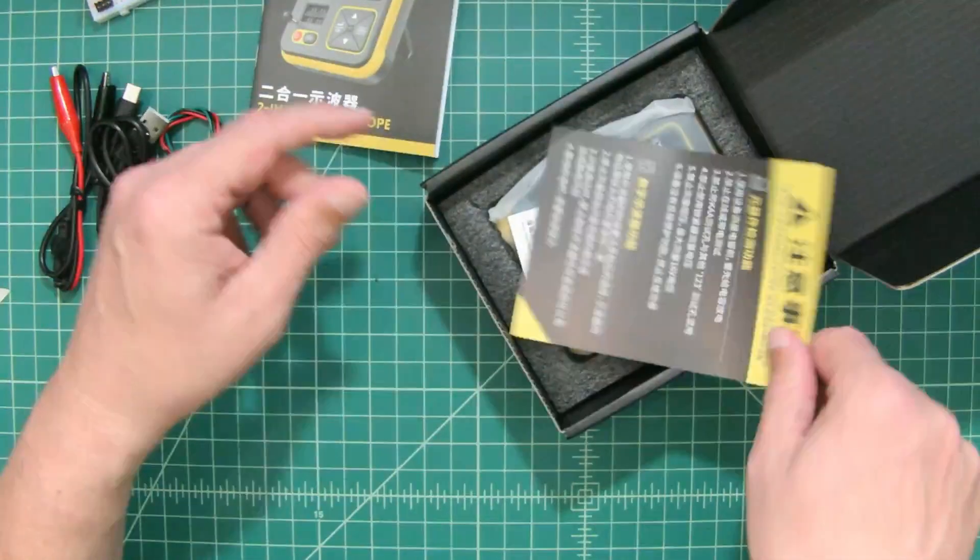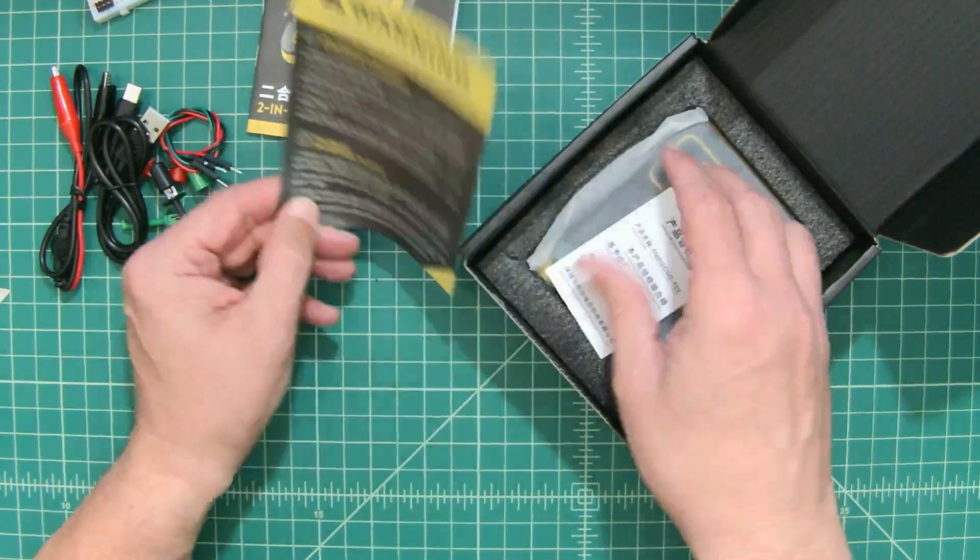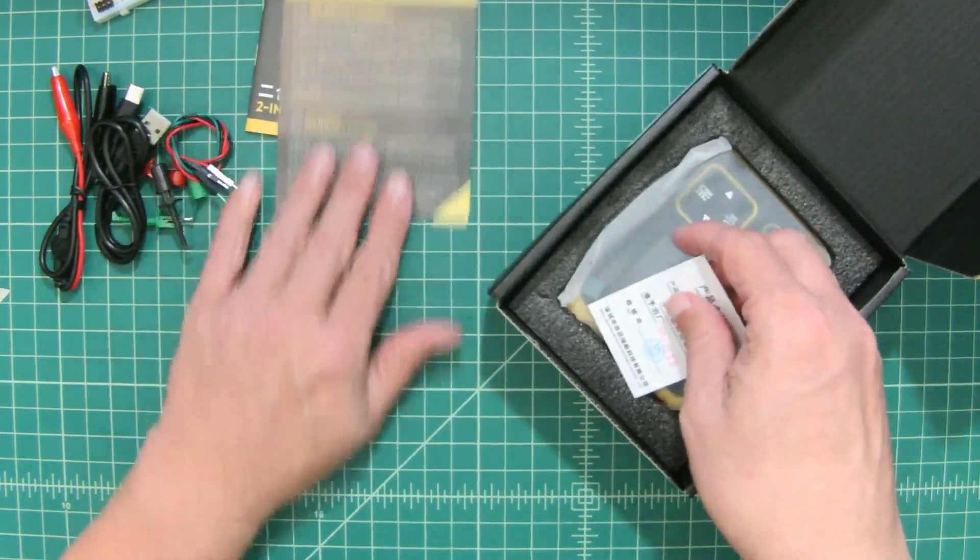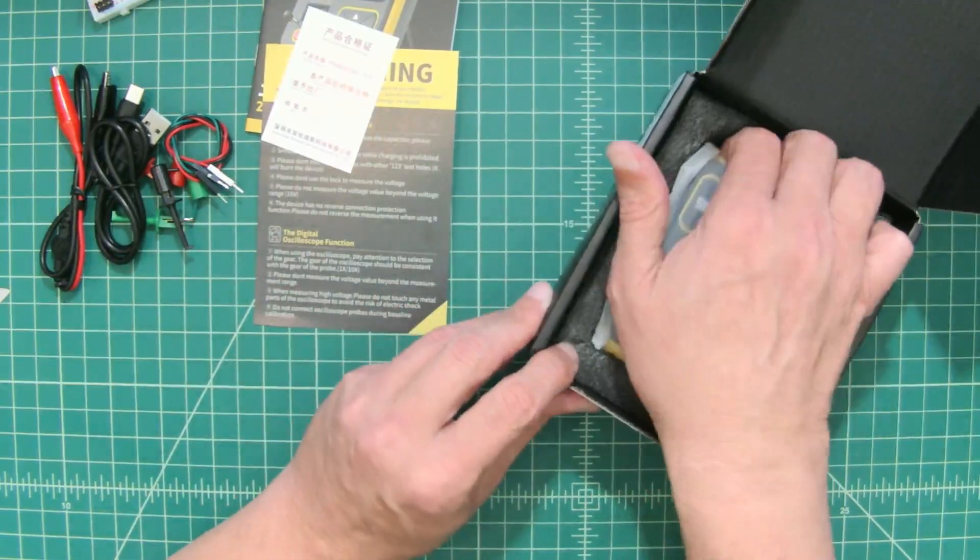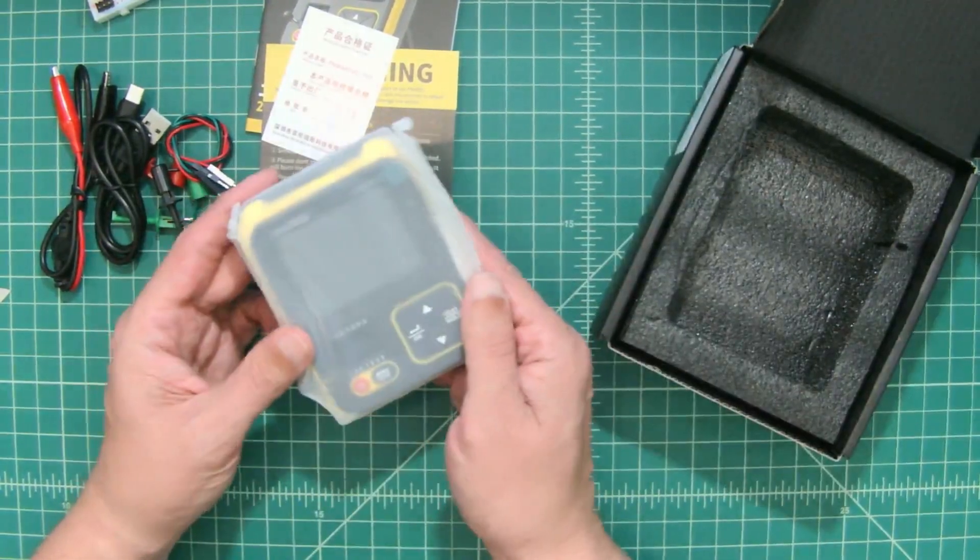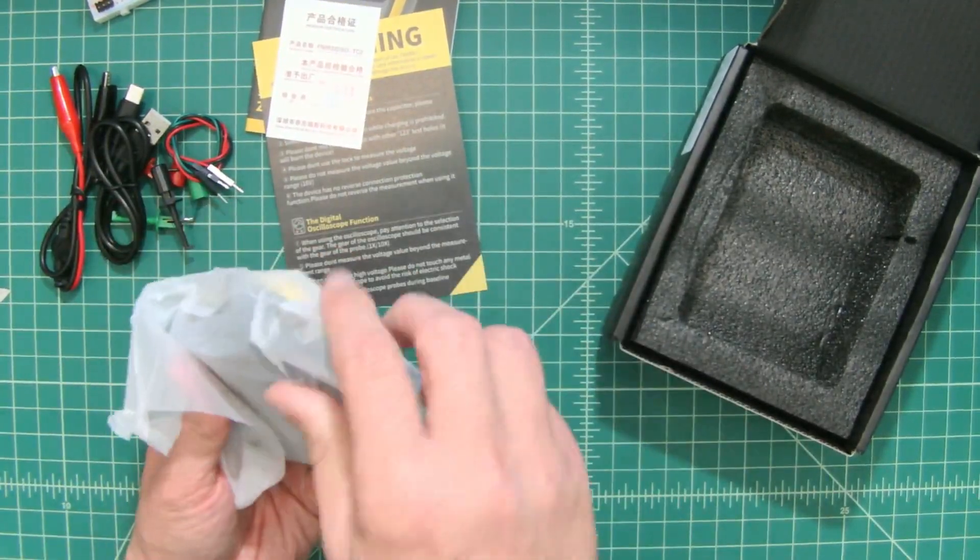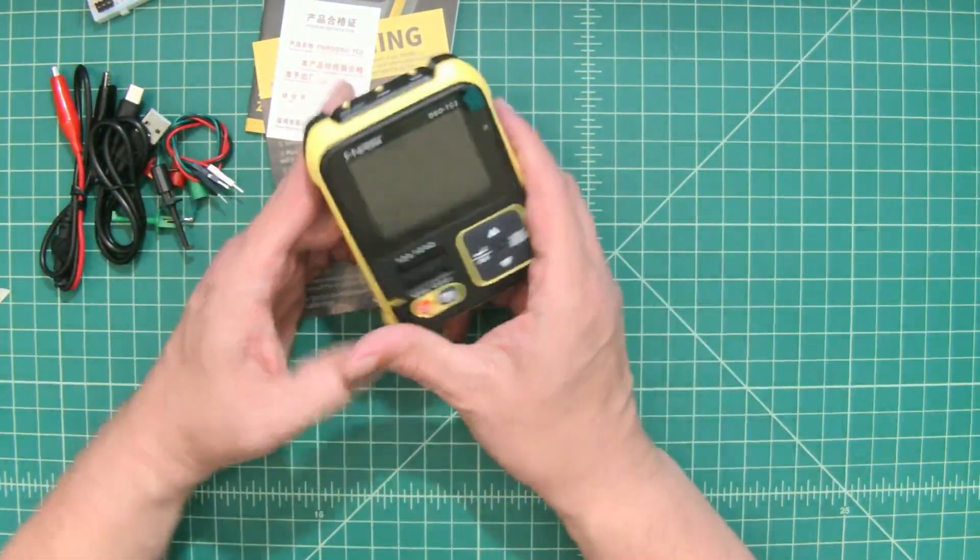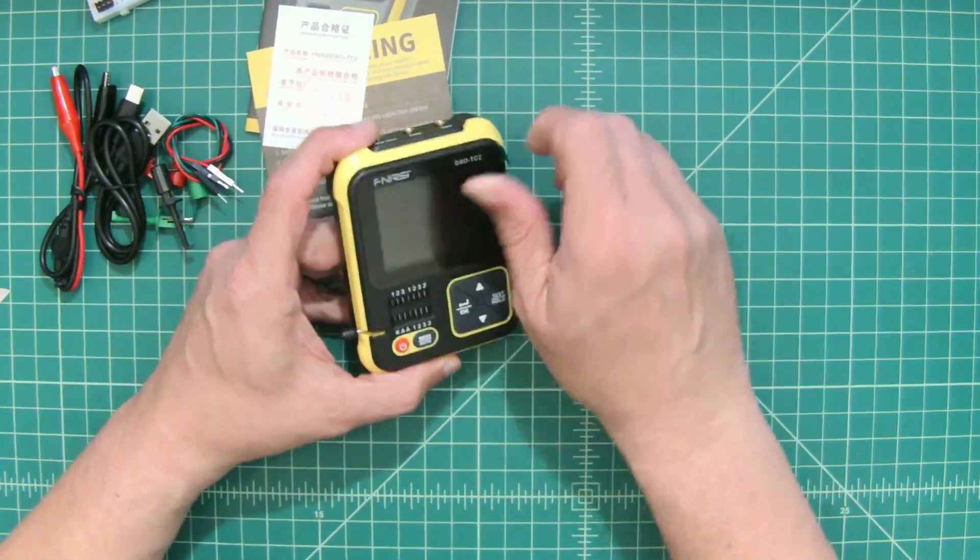It comes with a bunch of stuff. It comes with an instruction or user manual. I would suggest everybody read that and familiarize yourself with how the equipment works. There's a warning telling you what you should be careful about and an inspection notice. Let's take a look at this device.